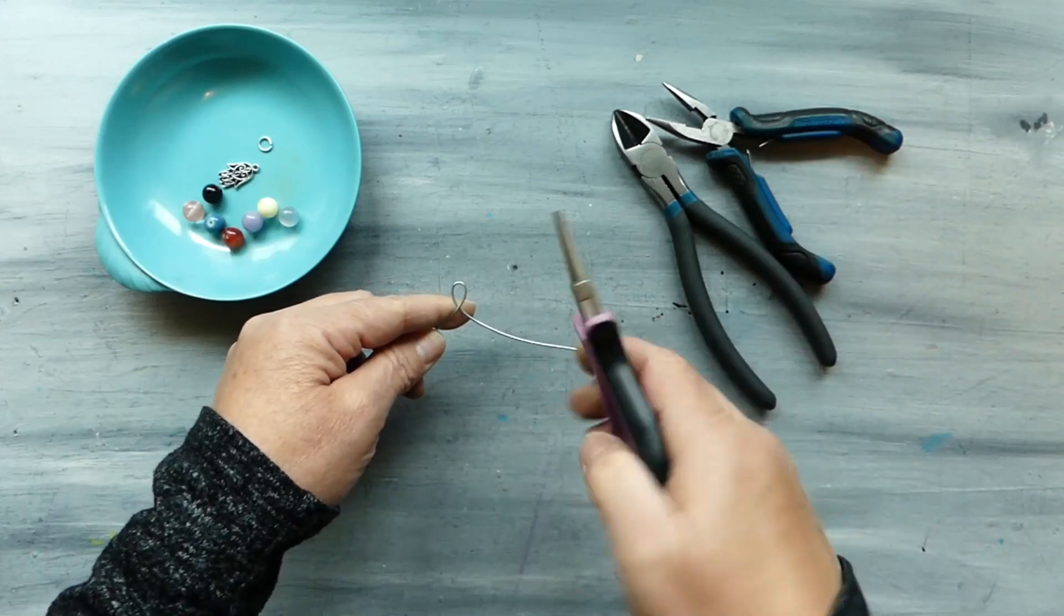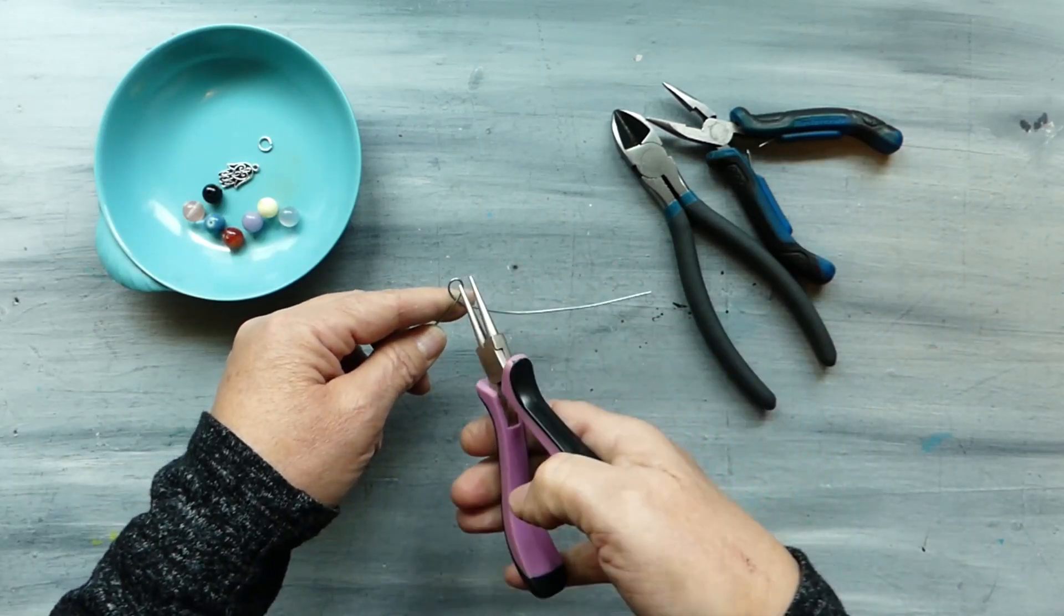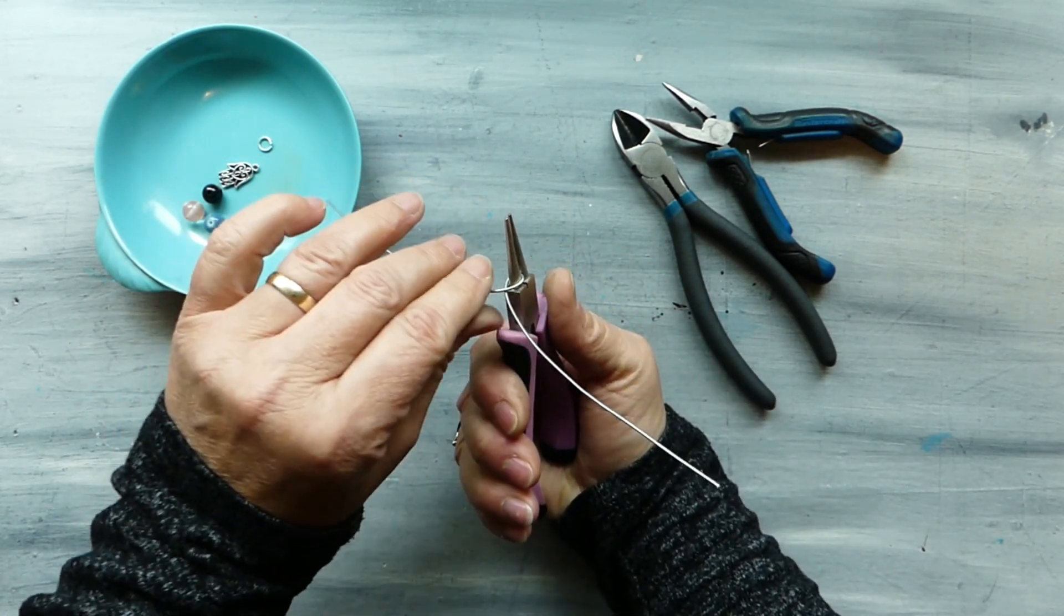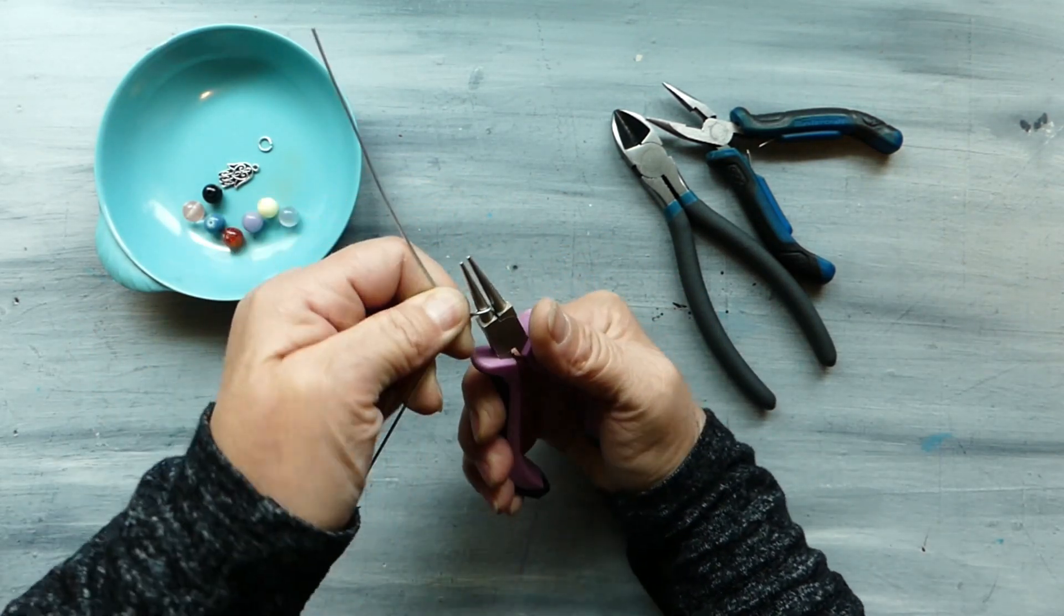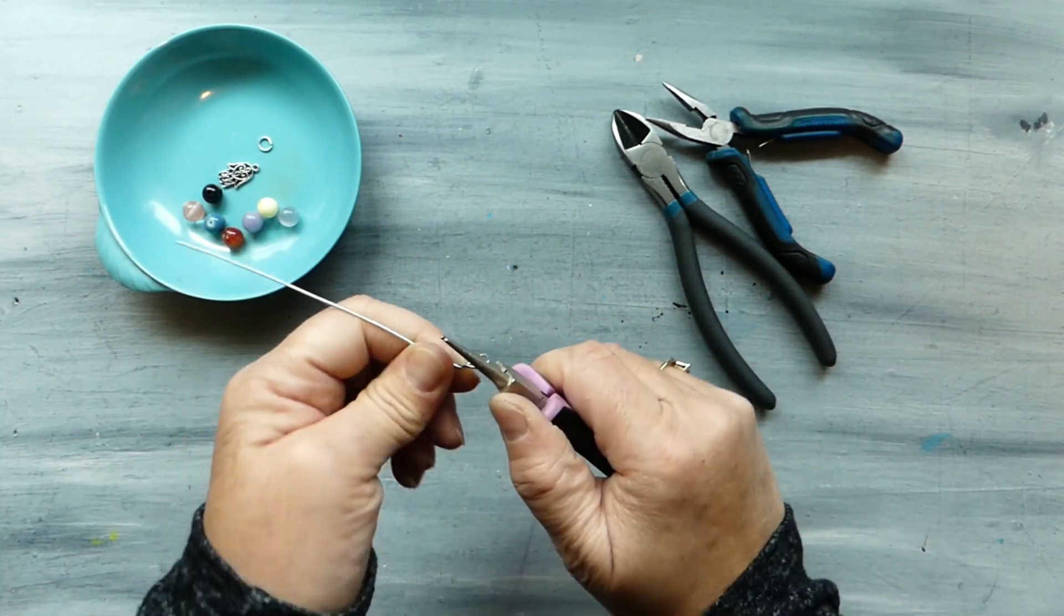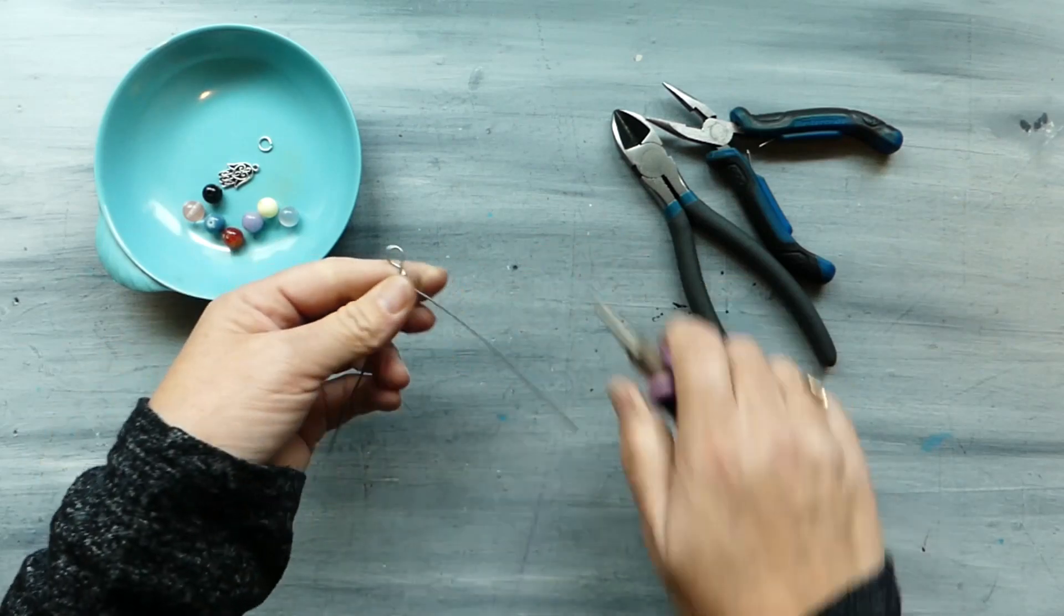And then we're going to take our round nose barrel nose pliers, we're going to pop it in that loop holding onto it firmly and then we're just going to give a couple of twists this way straightening that out.